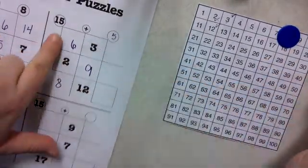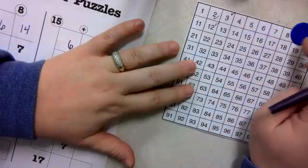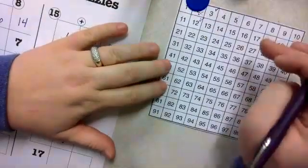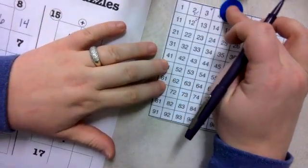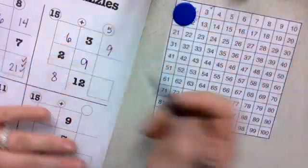Now, I need to do 6 plus 3, so I'm at 6. 1, 2, 3, I landed on 9. I'm at 2, and I need to add 9. 1, 2, 3, 4, 5, 6, 7, 8, 9, it's 11.